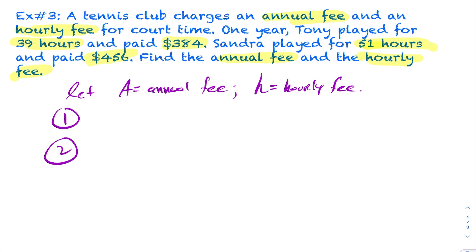So I know that Tony played for 39 hours and paid $384. So if I take 39 times h, h being the hourly fee, then 39 hours times the hourly fee, whatever it is, maybe it's $20 an hour, maybe it's $15 an hour, maybe it's $10, I don't really know. By multiplying those two together, that's going to be the amount of money that Tony paid for the hourly fee. Plus there's a fixed annual fee cost, and that whole sum came out to $384. Likewise, Sandra played 51 hours. So 51 times h would be the amount she paid. Plus that same fixed annual fee, and that came out to $456. So now I have two equations, two unknowns, and I can solve.